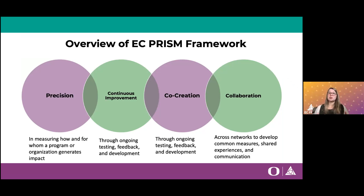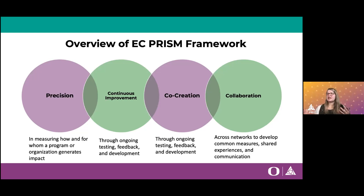Precision means: who is your program working for, how is it working, and how do you precisely measure and evaluate that? Continuous improvement asks: what other approaches can you take to make sure your program is as impactful as possible? It's not just doing one RCT — it's ongoing testing, feedback, and development. Co-creation ensures all stakeholders are at the table and we're building something together. Collaboration means shared experiences, shared communication, and shared measurement where that makes sense.